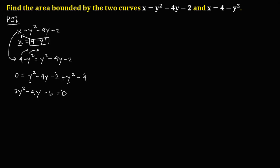Since we can reduce this equation — it's divisible by 2 — so 2y squared divided by 2 is y squared, minus 4y divided by 2 is 2y, and negative 6 divided by 2 is negative 3. So we have y squared minus 2y minus 3 equals 0.